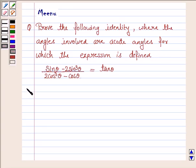So let's now move on to the solution. The given expression is, on the left hand side, sin θ minus 2 sin cube θ upon 2 cos cube θ minus cos θ. We have to prove that this expression is equal to tan θ.